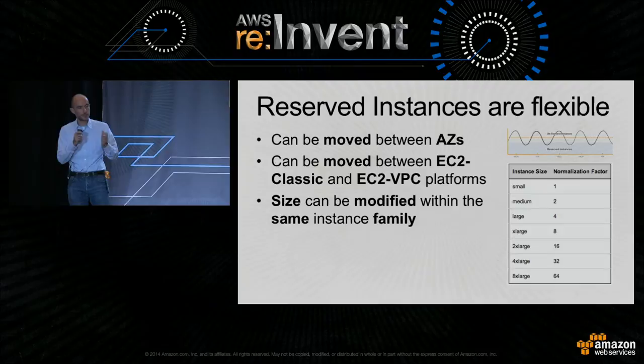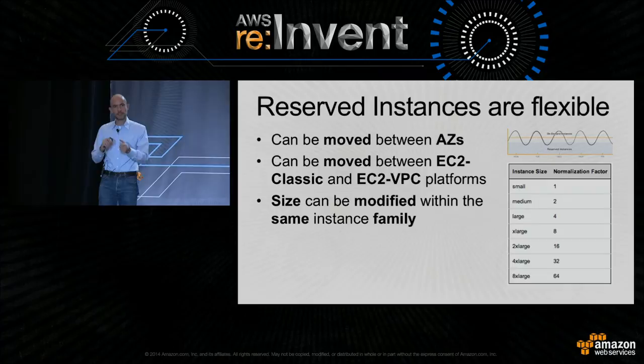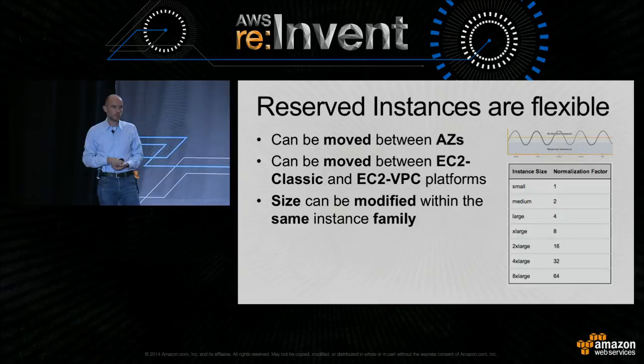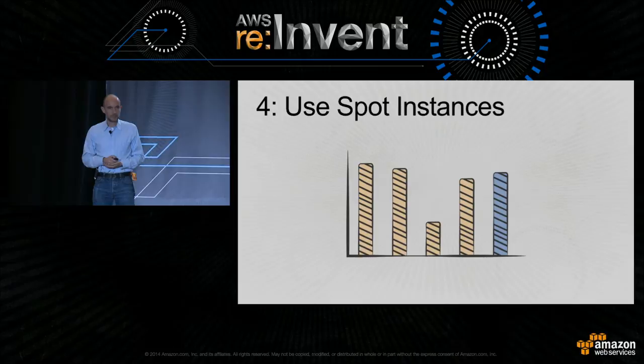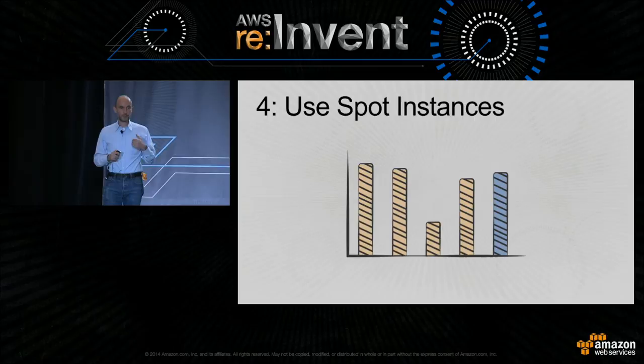Reserved instances are flexible — you can move them between availability zones, between EC2 Classic and VPC platforms, and you can even change their size by converting larger instances into many smaller instances in terms of reservations. Now, when looking at different pricing models, it's always worth checking out spot instances — these are my personal favorite. I use spot instances for my own personal instances.